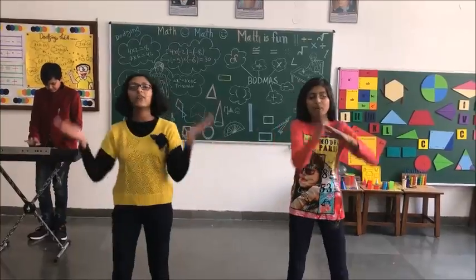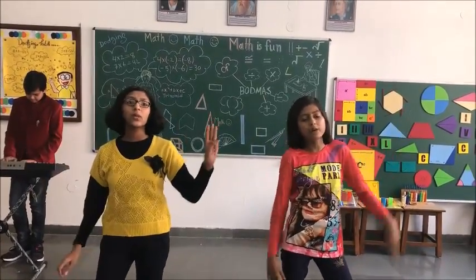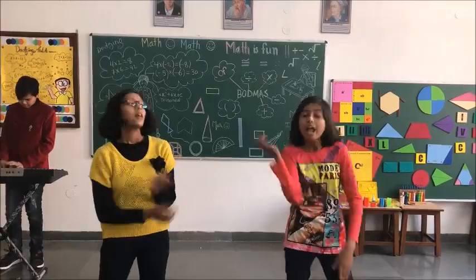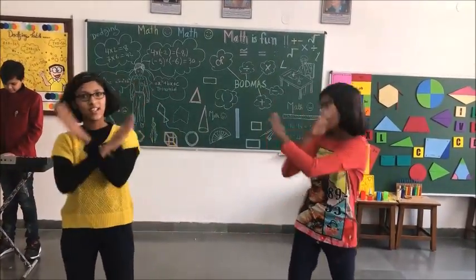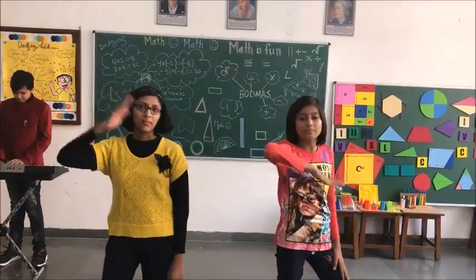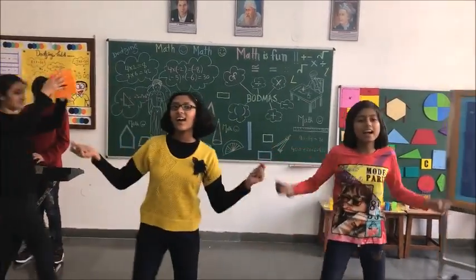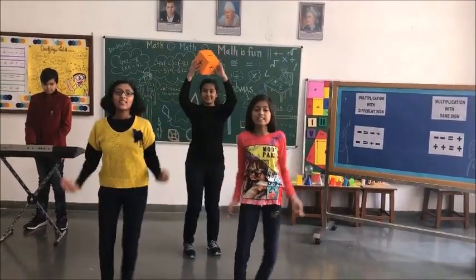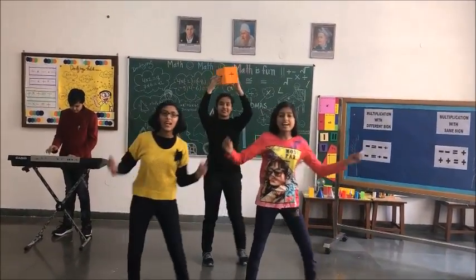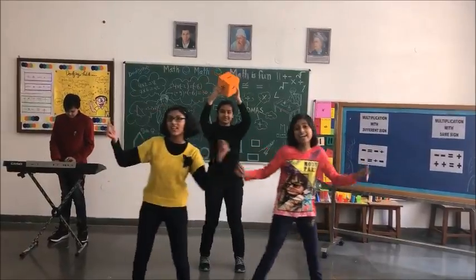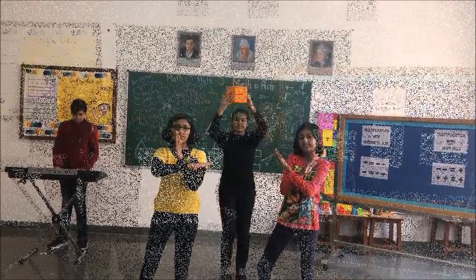Math multiplication is kind of like a pretty good addition. Five times three is five groups of three, once you are into the method. When the signs are different, the answer is negative. When the signs are the same, the answer is positive.